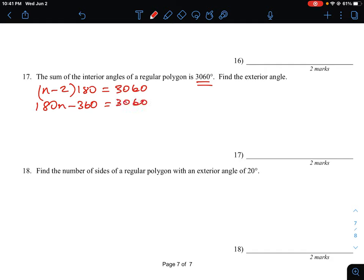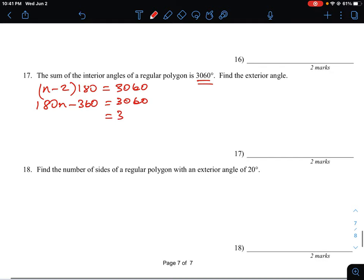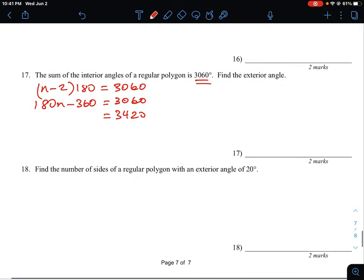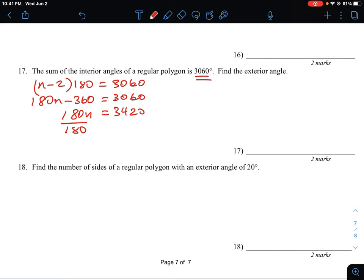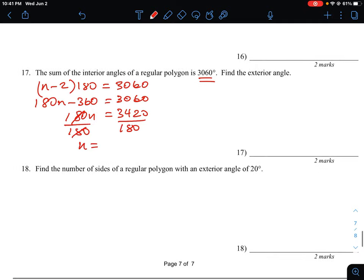Then add 360 to both sides, which gives us 3,420 degrees. That equals 180n. Then divide both sides by 180, which gives us n, the value for how many sides this polygon has. So n turns out to be 19 in this case.